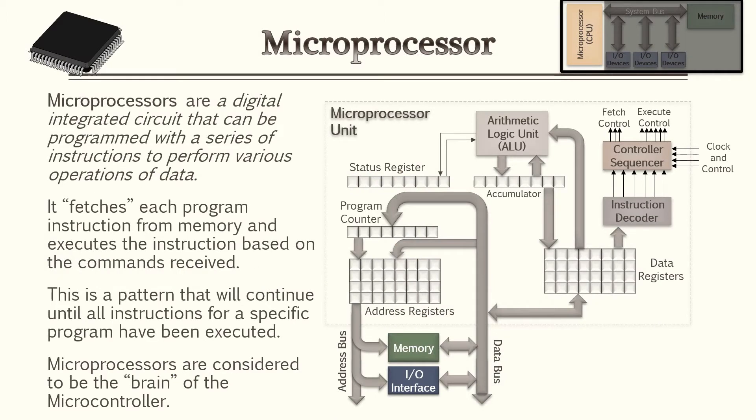We're going to jump right into the most complex element of the microcontroller which is your microprocessor. We're not going to go very in-depth on this particular element, just to give you an overview. Microcontrollers are a digital integrated circuit that can be programmed with a series of instructions to perform various operations of data. Basically it fetches each program instruction from memory and then executes this instruction based on the commands received. This pattern will continue until all the instructions of the specific program have been executed. When you think of microprocessors that's considered to be the brain of the microcontroller.